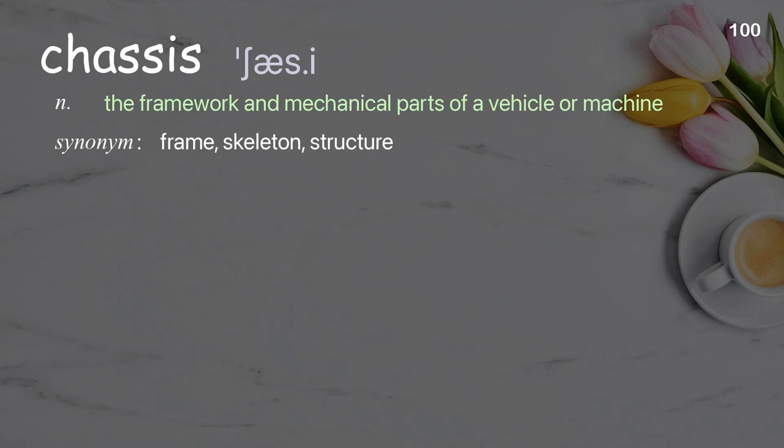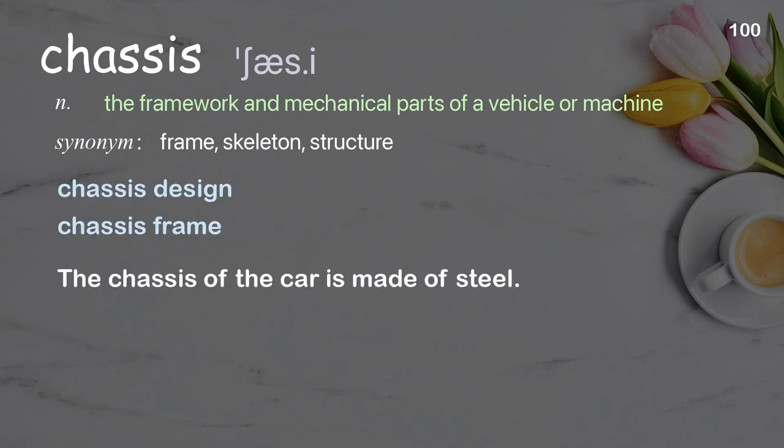Chassis: the framework and mechanical parts of a vehicle or machine. Examples: chassis design; chassis frame; the chassis of the car is made of steel.